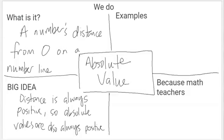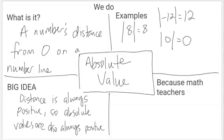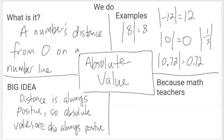A few examples to get used to the way we write it. The absolute value of eight is eight — it's eight units away from zero. The absolute value of negative 12 is 12 units away from zero, so the absolute value of negative 12 is 12. Zero is a weird one: how far is zero away from zero? It's zero units away. Fractions and decimals work the same way — the absolute value of 0.72 is 0.72 units away from zero. The absolute value of negative one-fifth is one-fifth of a unit away from zero. That's it.